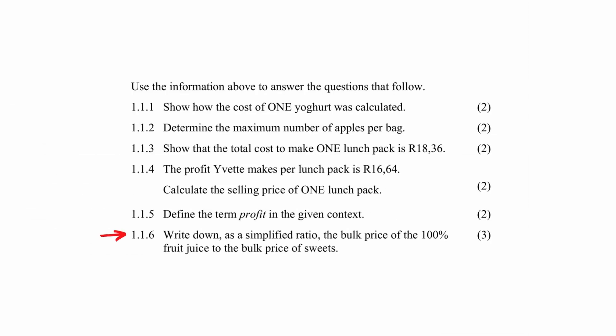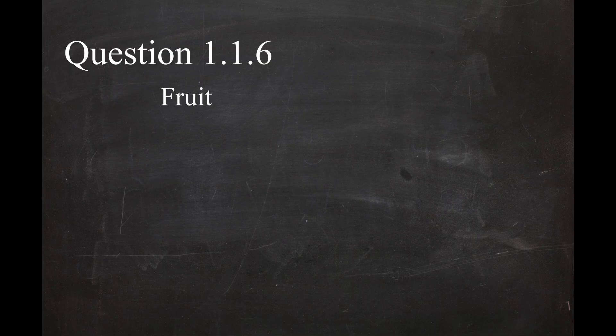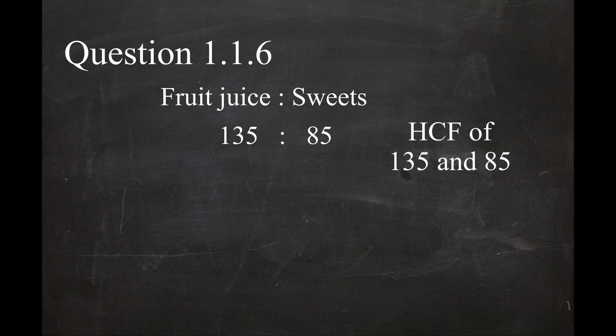In question 1.1.6, you have to write down as a simplified ratio the bulk price of the 100% fruit juice to the bulk price of the sweets. Since the question mentions the fruit juice first and then the sweets, the ratio has to be written as fruit juice to sweets. This ratio will now have to be simplified. To do this, we must find the highest common factor for the values of 135 and 85.